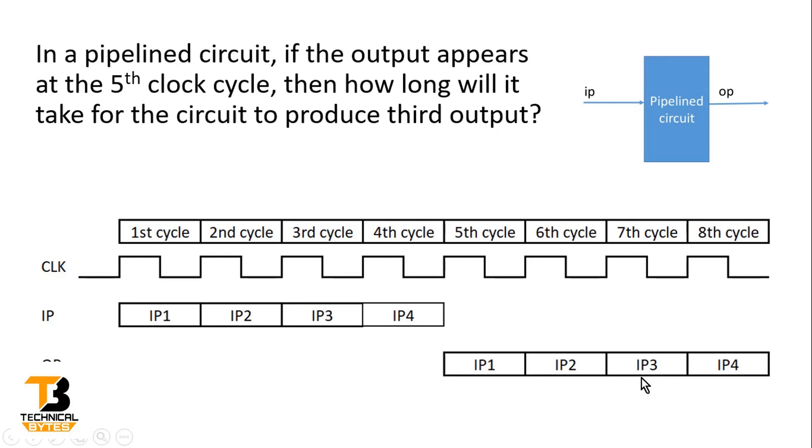Friends, this is a very important concept when we talk about pipeline circuits. Here each input has a latency. So if I'm applying my input in the first clock cycle and it is appearing at the output in the fifth clock cycle, that means I can say that there is a latency of three clock cycles for every input to reach at the output.